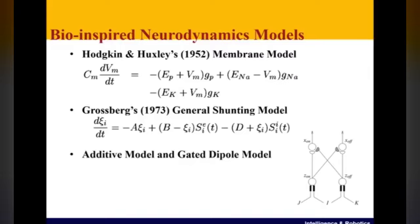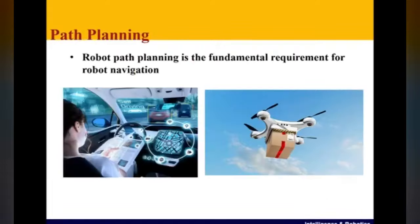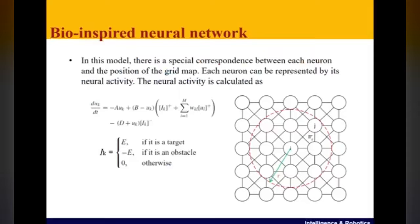In our paper, we introduce in detail the bio-inspired neurodynamics models: the shunting model, ADIF model, and gated deploy models. One of the most important issues is robot path planning, because path planning is a fundamental requirement for many robot applications. In this model, there is a special correspondence between each neuron and position in the grid map. Each neuron can be represented by its neural activity.